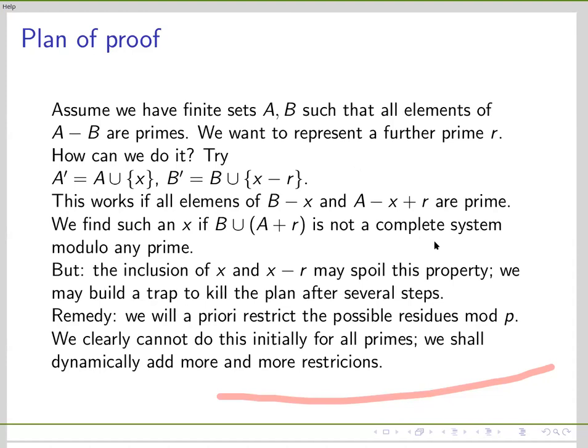What we will do is impose restrictions on our sets a and b modulo quite a lot of primes. We cannot fix them for infinitely many primes at the start because then there may be no integer satisfying all those conditions. Instead, we import some initial conditions and then as we proceed we invent new conditions while keeping all the numbers which are already in our set.